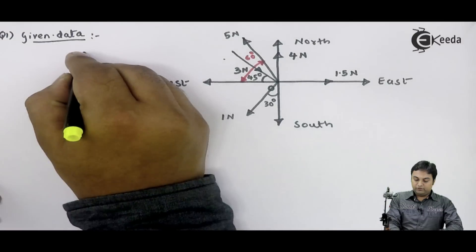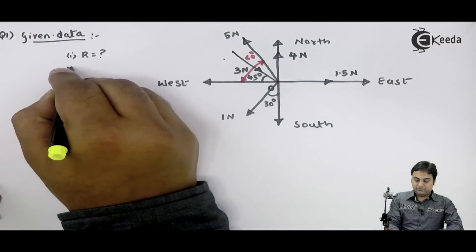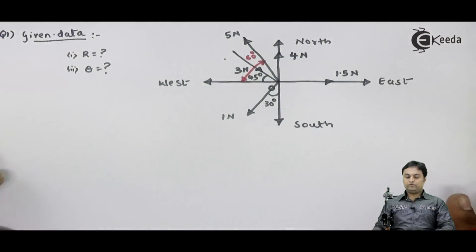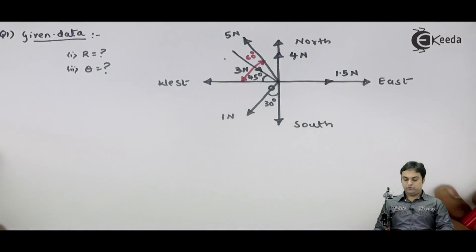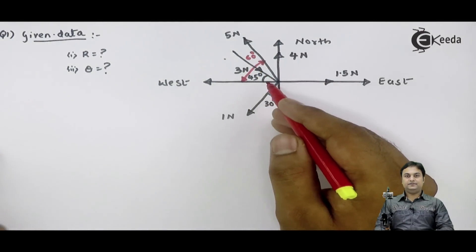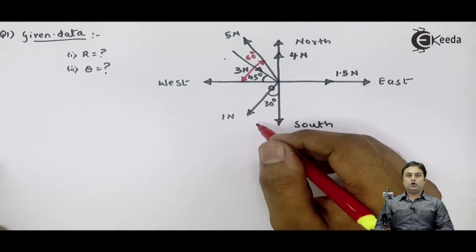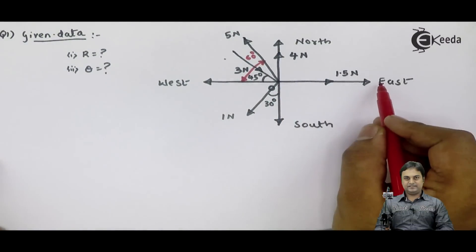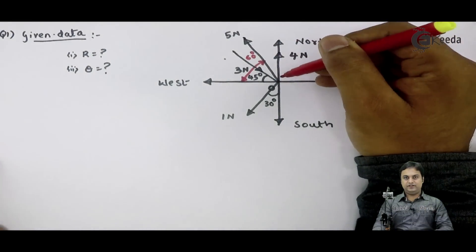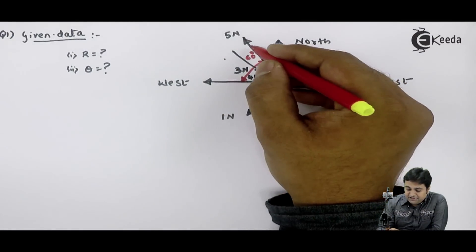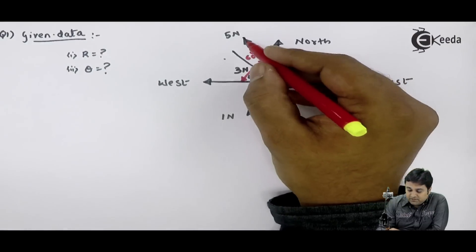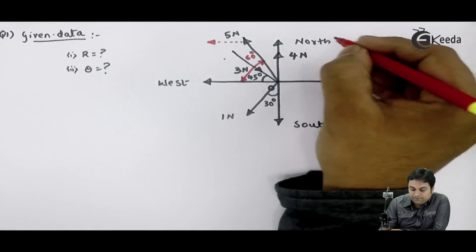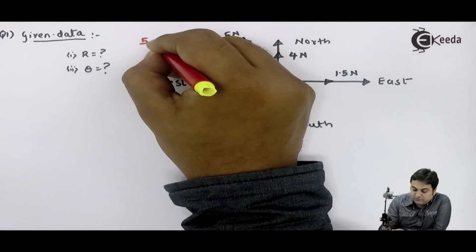We have to calculate the magnitude of the resultant and its inclination. To solve this, we must convert all forces into horizontal and vertical components. The 1.5 Newton force is already horizontal and the 4 Newton force is already vertical, so they remain as is. For the 5 Newton force inclined at 60 degrees to horizontal, resolving gives a horizontal component of 5 cos 60° and a vertical component of 5 sin 60°.